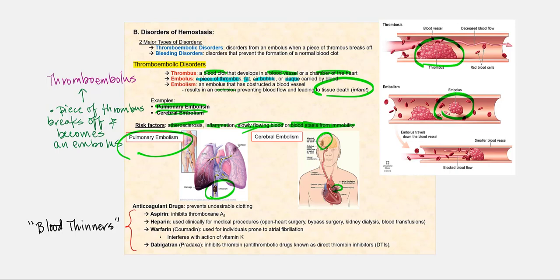We have anticoagulant drugs that will prevent undesirable clotting. Aspirin is a good example. And why aspirin is referred to as an anticoagulant drug is because it inhibits thromboxanes. And thromboxanes are released by activated platelets. Thromboxanes are vasoconstrictors, and also they promote platelet adhesion and aggregation.